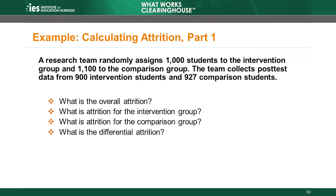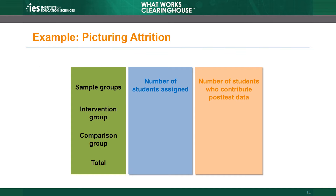Let's walk through an example. A research team randomly assigns 1,000 students to the intervention group and 1,100 to the comparison group. The team collects post-test data from 900 intervention students and 927 comparison students. For the intervention group, there are 1,000 students and researchers collected post-test data for 900 of them. For the comparison group, there are 1,100 students and researchers collected post-test data for 927 of them. The total sample size is 2,100 students, and the total number with observed post-test data is 1,827 students.